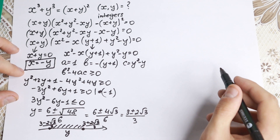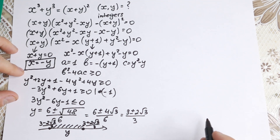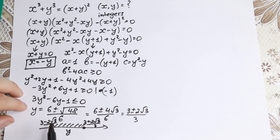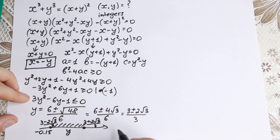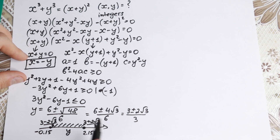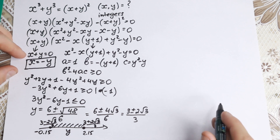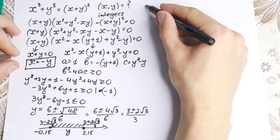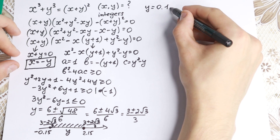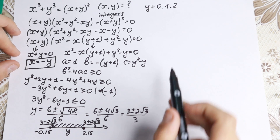But we are talking about integers, so we need to find our integer values of y. This element (3 minus 2√3)/3 is approximately equal to minus 0.15, and the other point is approximately equal to 2.15 — since √3 is about 1.7. Talking about integer numbers, we don't have many variants. Our y is equal to 0, 1, and 2. Because beyond 2 we have 3, but this point ends at approximately 2.15. So from this inequality we find y equal to 0, 1, and 2.